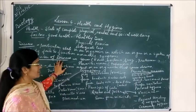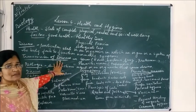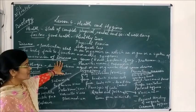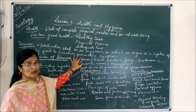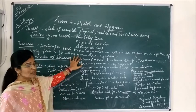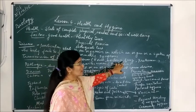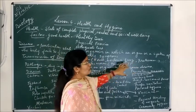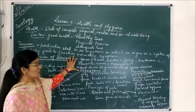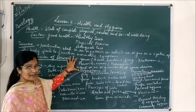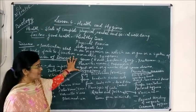Disease is transmitted through various agents. The different agents are: first, germs. Germs are the microorganisms which cause disease, like virus, bacteria, fungi, and protozoa. These microorganisms enter our body in one way or the other and cause disease.